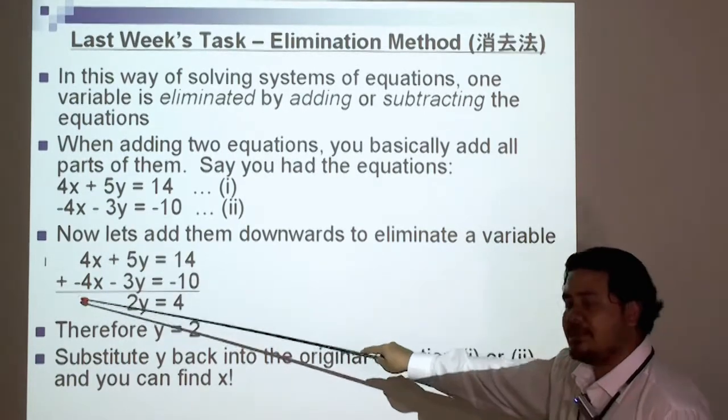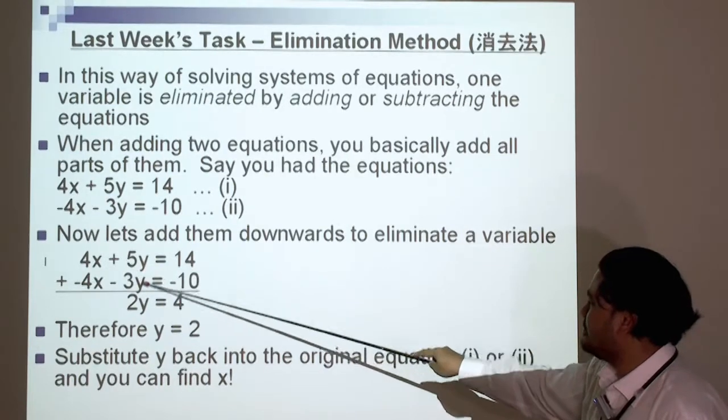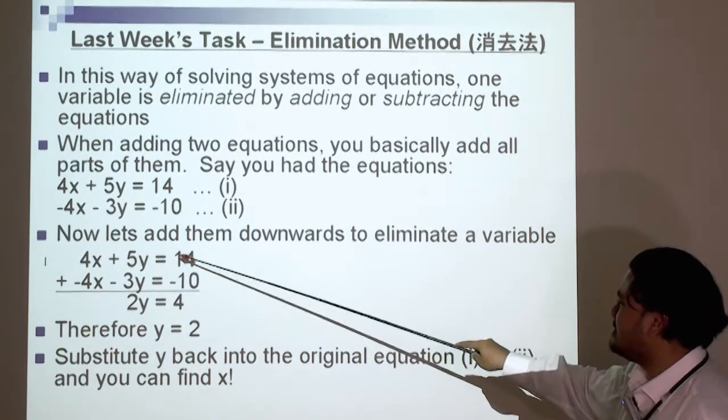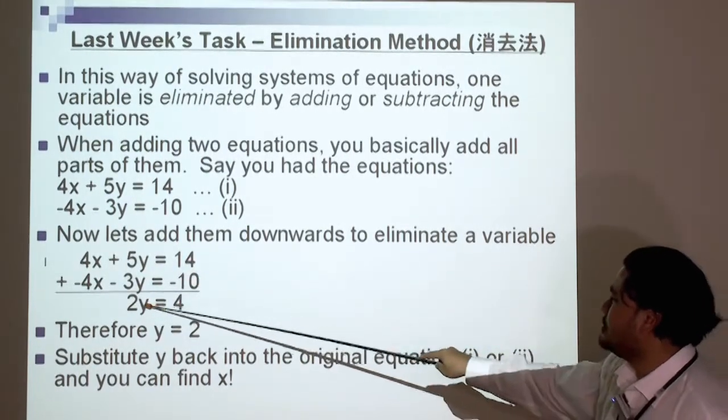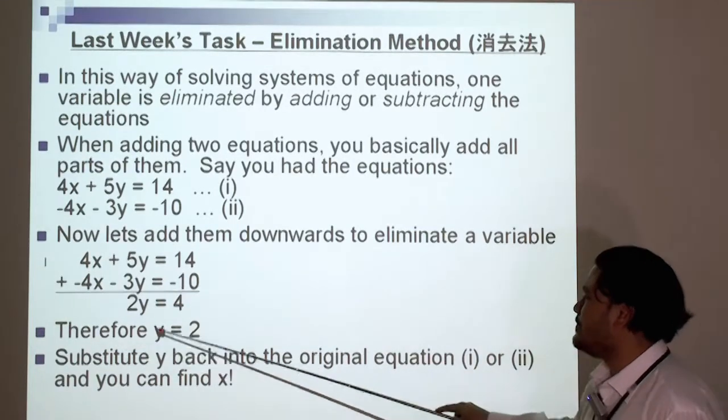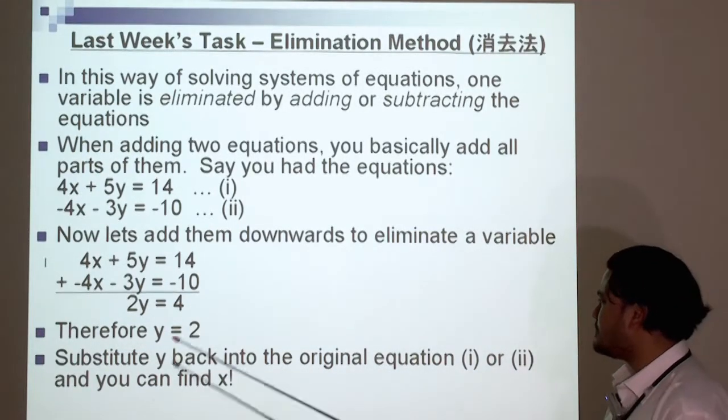4x plus negative 4x, that cancels out. So we've eliminated the x. 5y plus negative 3y is 2y. 14 plus negative 10 is 4. 2y is equal to 4. Therefore, y is equal to 2.